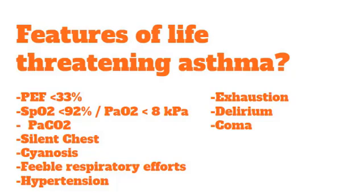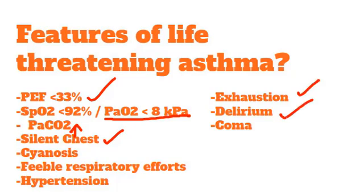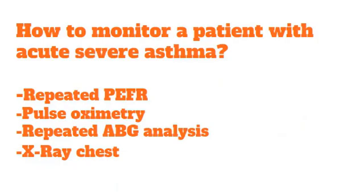Life-threatening asthma is identified when PEFR is less than 33 percent of predicted, oxygen saturation is below 92 percent, partial pressure of oxygen is less than 8 kilopascals, and carbon dioxide is elevated or in normal range. Additional features include a silent chest with no breath sounds, cyanosis, feeble respiratory efforts, hypotension, exhaustion, delirium, or coma. If these features are present, the patient has life-threatening asthma.